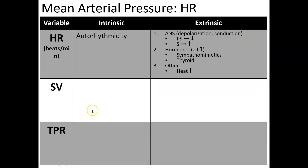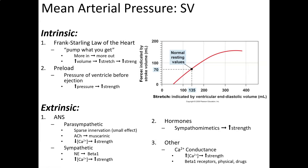Here's the summary table for heart rate: intrinsic auto-rhythmicity via the SA node; extrinsic via the ANS where parasympathetic decreases and sympathetic increases it; hormones all increase it; and heat — if body temperature goes up, heart rate goes up. The next variable, stroke volume, tends to be the hardest for students because most of these concepts are new.